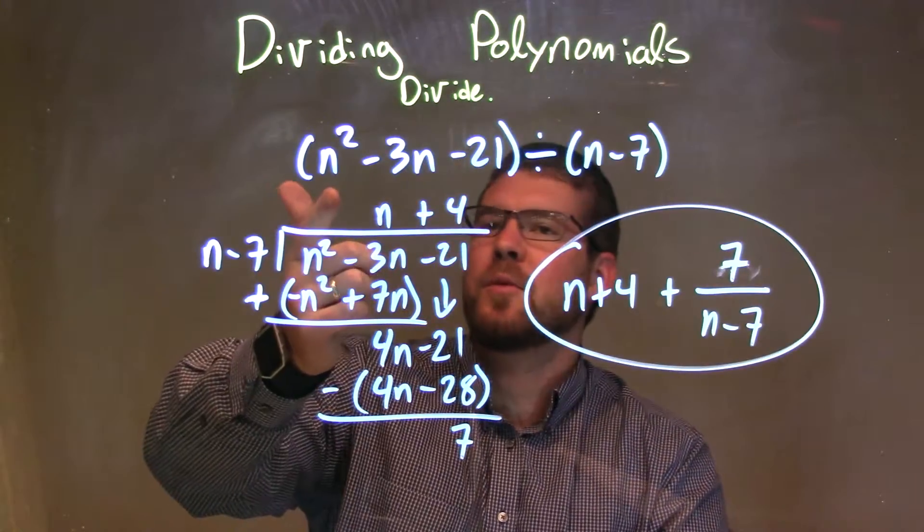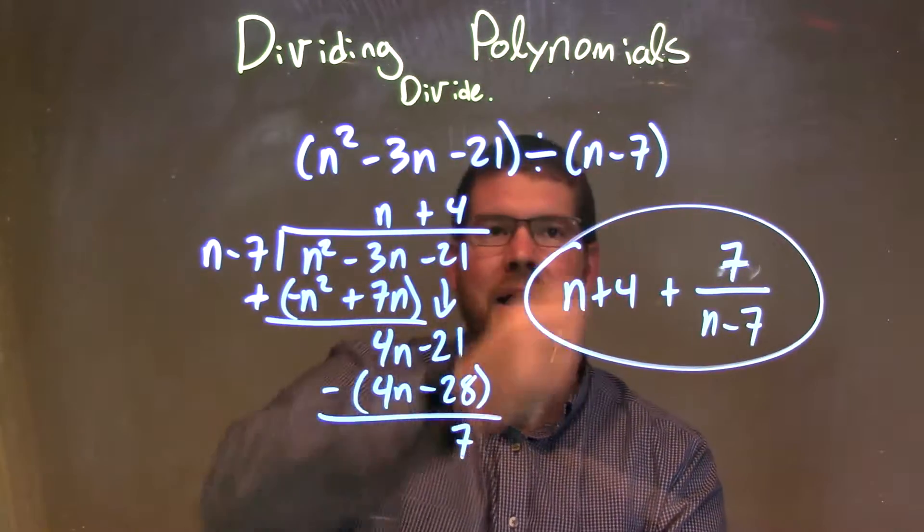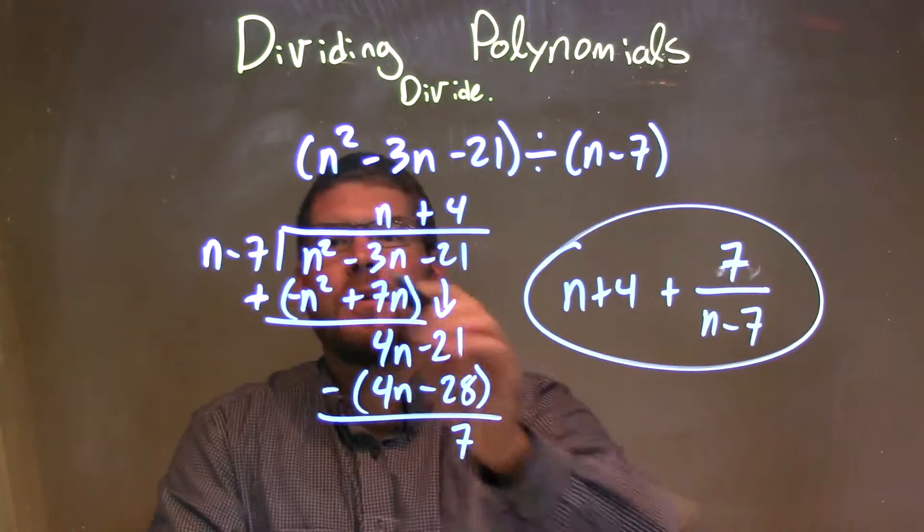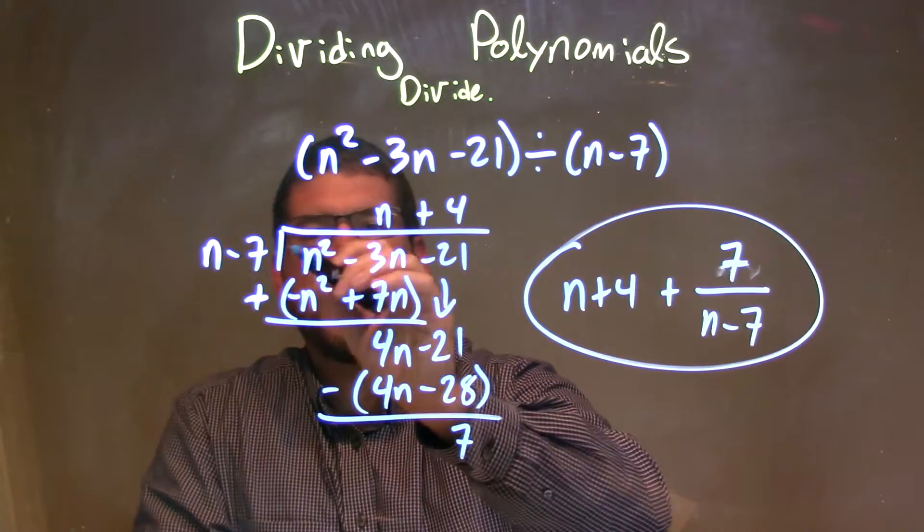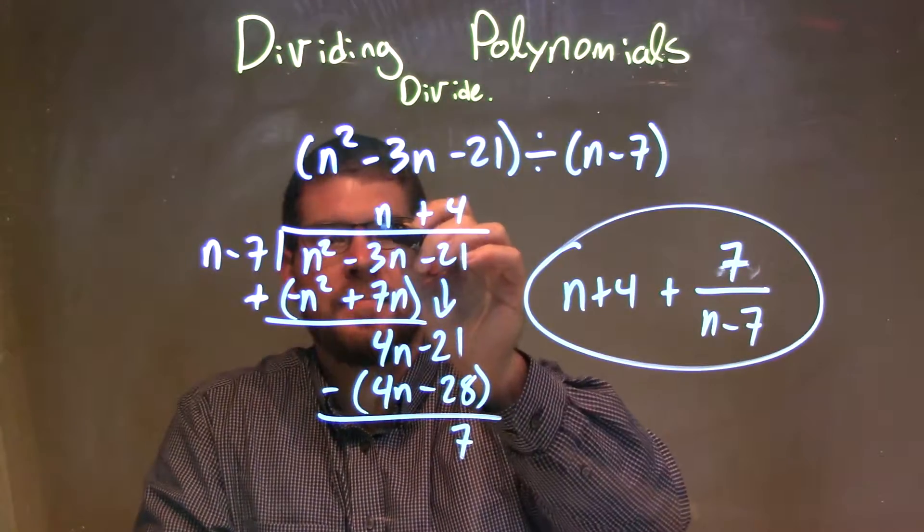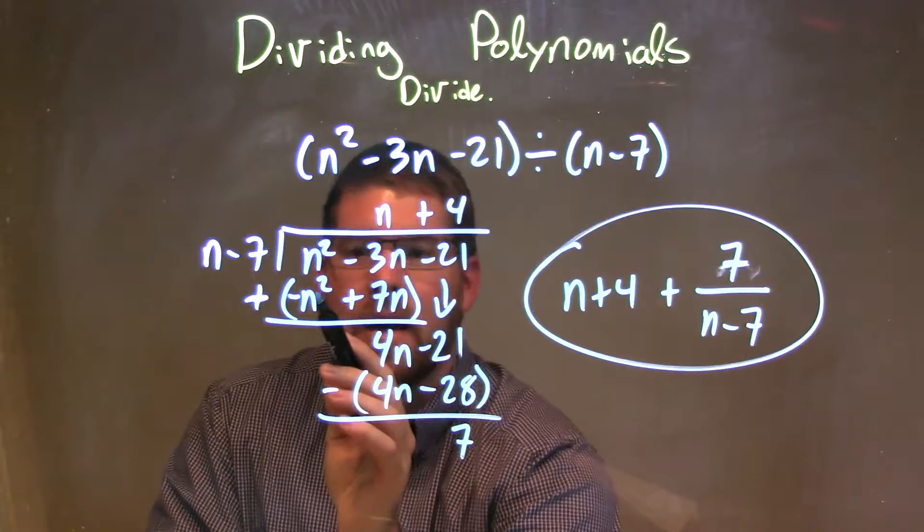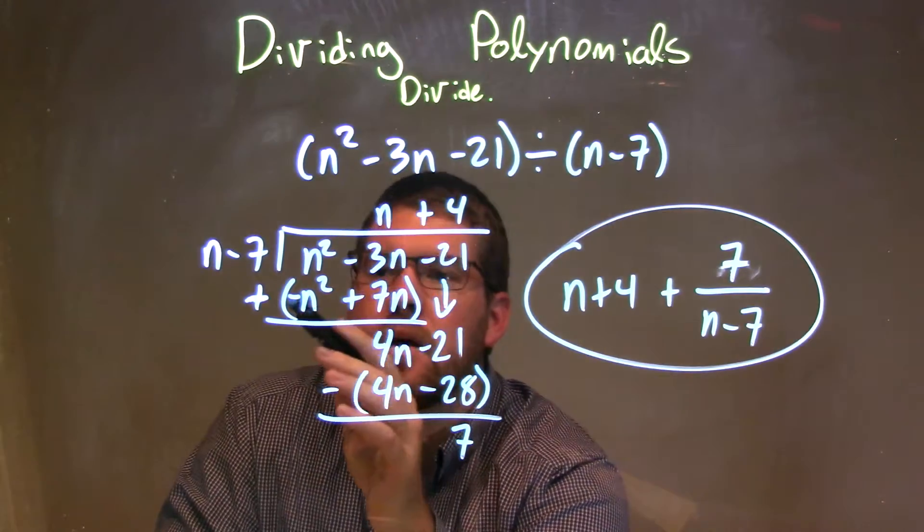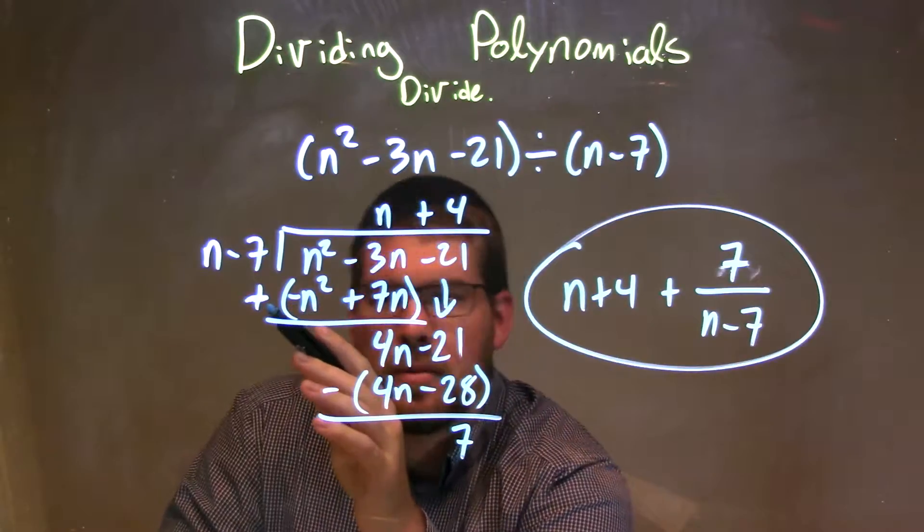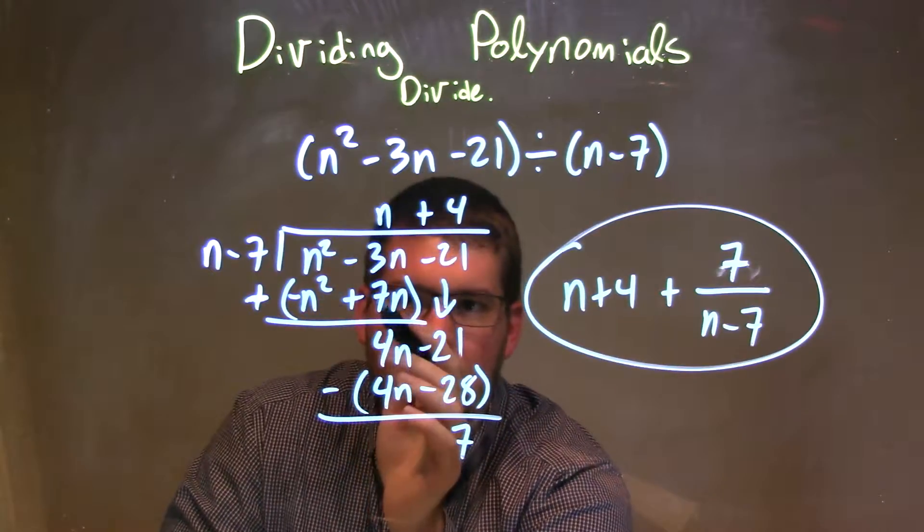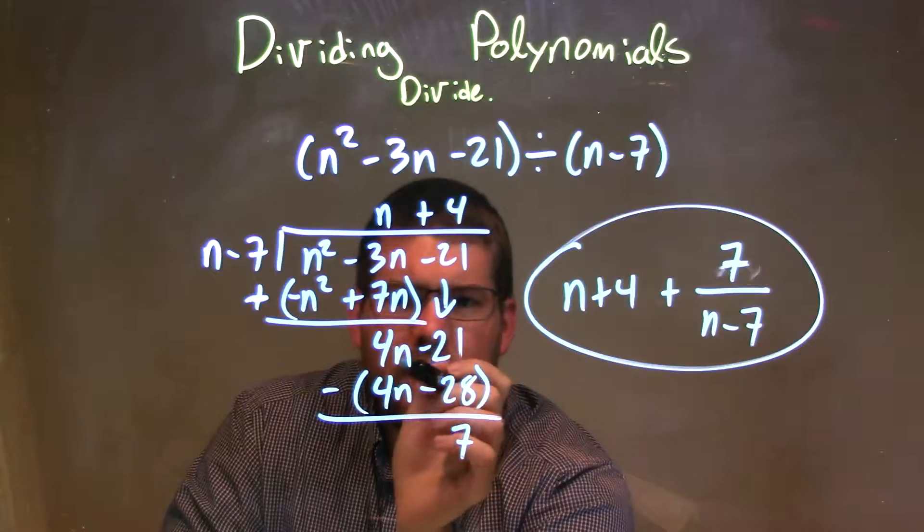So let's recap. We're given n squared minus 3n minus 21 divided by n minus 7. Under my long division here, I said, okay, what times n gives me n squared, and that's an n. I multiplied it out. It gave me n squared minus 7n, and then I subtracted them, or I distributed the subtraction sign making it addition. It's a negative, now a positive there.